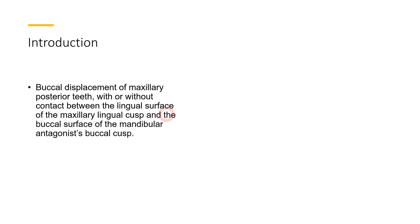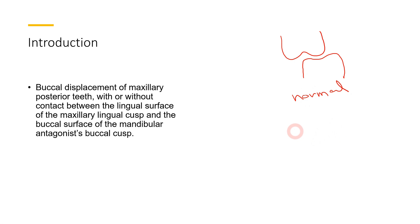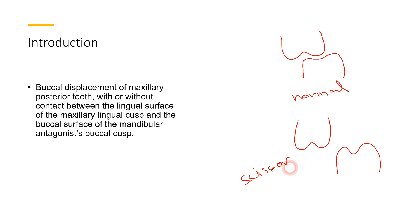If we talk about the definition of scissor bite, it basically means that there is buccal displacement of maxillary teeth with or without the lingual displacement of the mandibular molar. In a normal relation, we have a maxillary molar and a mandibular molar in normal relation. However, in cases of scissor bite, the maxillary molar is present completely buccal to the lingually placed mandibular molar. This relation looks like a scissor.